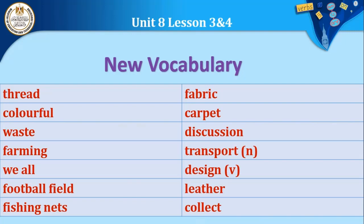'Farming' comes from the verb 'farm'/يزرع, giving us 'farmer' meaning a farmer/مزارع. 'Football field' — a 'field' is what we call the football pitch. 'Fishing nets' — notice that in 'football field' and 'fishing nets' we have two nouns together; this is called a compound noun, where two nouns are linked. 'Net' means a net/شبكة and 'nets' means nets/شبكات. 'Fishing nets' is also a compound noun.